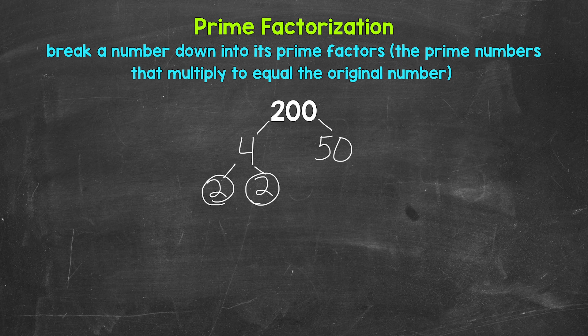So let's circle those 2s to show that we have prime numbers. Now moving over to 50, we need to think of factors. 2 and 25 are factors of 50, so let's break this down into 2 and 25. 2 is prime, so we are done here. But we can break 25 down. We know that 5 times 5 is 25, so let's break 25 down into 5 and 5.